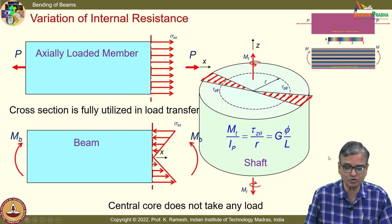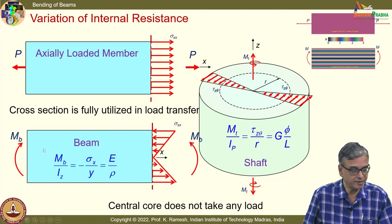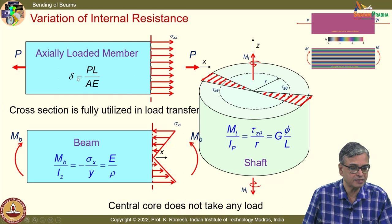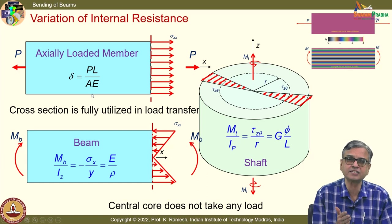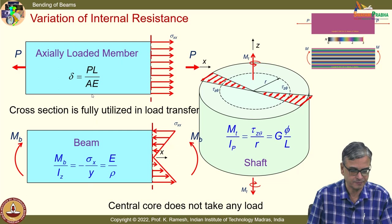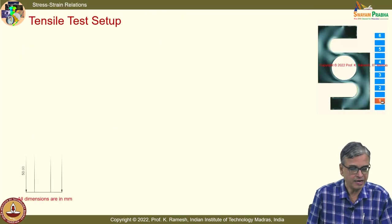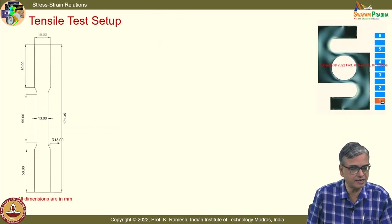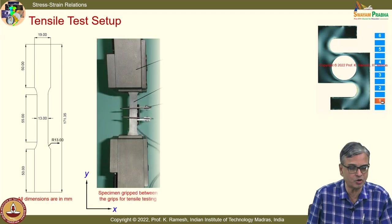The whole course centers around development of the torsion formula, then the bending formula. For an axially loaded member, the elongation equal to PL/AE is a useful relation. We have also seen a simple tension test to find out the Young's modulus and yield strength.